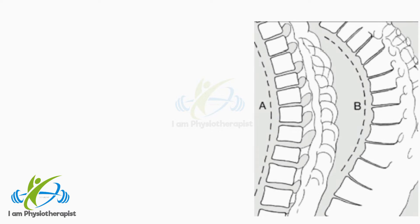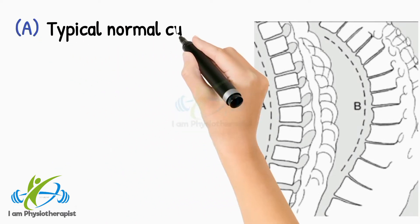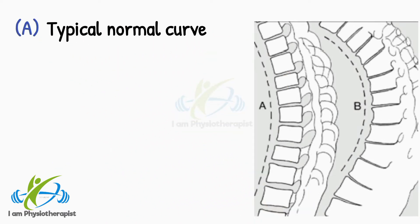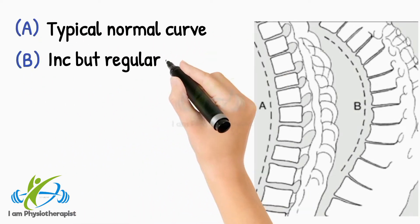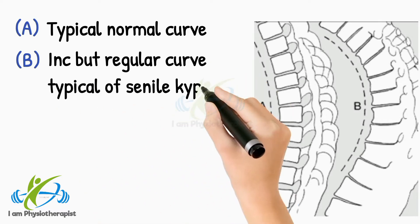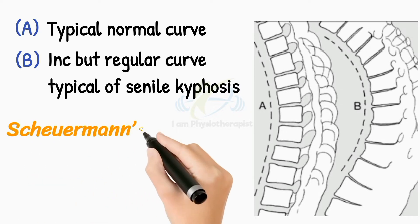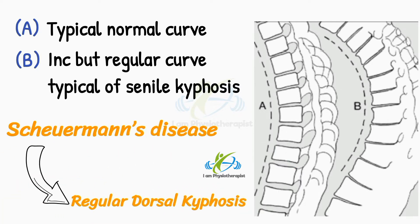Note curvatures in the thoracic spine. Point A shows a typical normal curve, and point B shows an increased but regular curve typical of senile kyphosis. Scheuermann's disease is another frequent cause of a regular dorsal kyphosis.